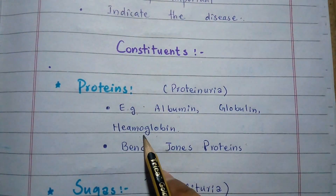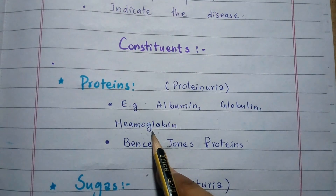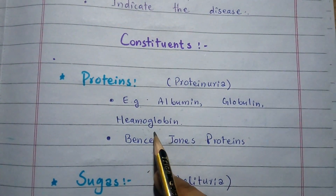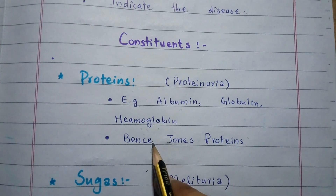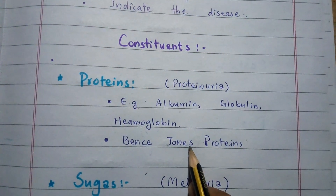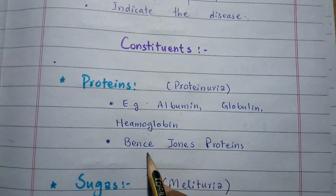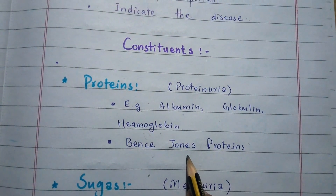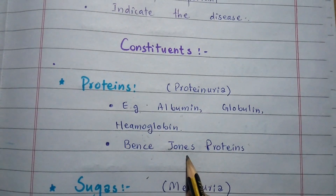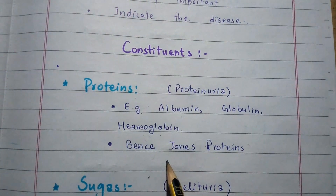If hemoglobin is present in the urine, then the condition is called hemoglobinuria. Another protein that can also be seen in abnormal urine is called Bence-Jones protein. Bence-Jones proteins are proteins excreted in the urine of multiple myeloma patients, and can also be a component of abnormal urine.